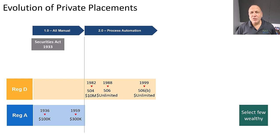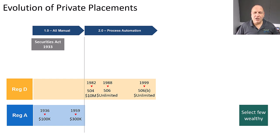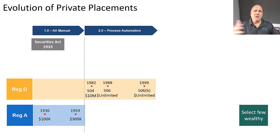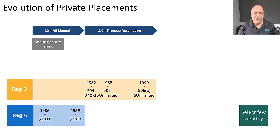Private Placements 2.0 really started in the 80s when a couple of things happened. First of all, computers became the norm. We automated the securities industry by and large — just like automation has changed everything else in the world, it also dramatically impacted the securities industry for the better. What we usually do with technology is automate the old way of doing things, and that's largely what happened in Private Placements 2.0.